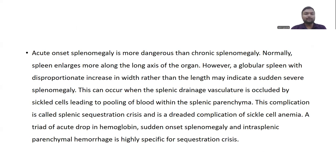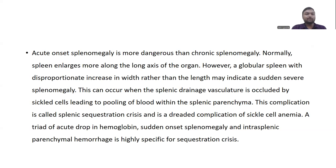This can occur when the splenic drainage vasculature is occluded by sickle cells, leading to pooling of blood within the splenic parenchyma. This complication is called splenic sequestration crisis, and it is a dreaded complication of sickle cell anemia. A triad of acute drop in hemoglobin, sudden onset splenomegaly, and intrasplenic parenchymal hemorrhage is highly specific for sequestration crisis.